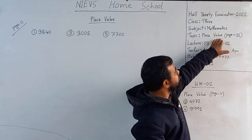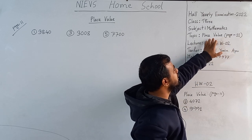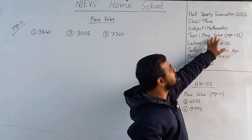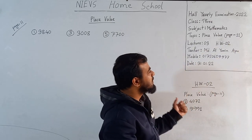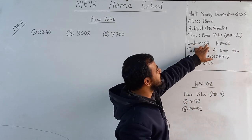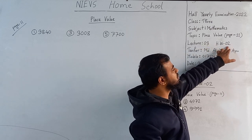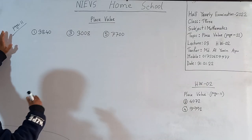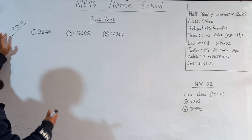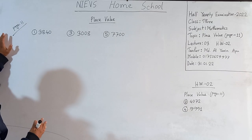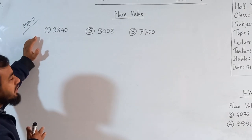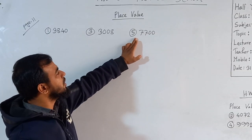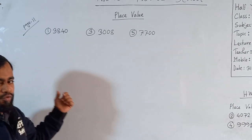Our today's topic is place value, page 11. We'll learn today how to solve place value. In page number 11, we have some numbers. I have taken three numbers from there. In different ways we'll solve the place value — from the book there is a different way, but we'll solve this way. We'll solve number 1, number 3, and number 5. Your homework will be number 2 and number 4 from page number 11.